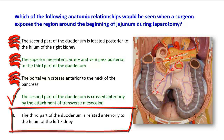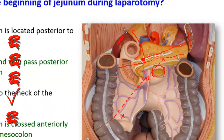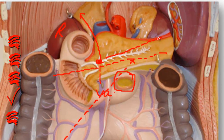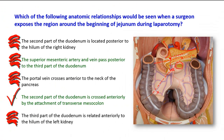Option E: the third part of the duodenum is related anteriorly to the hilum of the left kidney. This is wrong. The third part of the duodenum reaches the side of the L3 vertebra and doesn't really reach the hilum of the kidney. The hilum of the kidney is a little bit higher up and more to the left, and it is crossed by the pancreas and is not related to the duodenum.